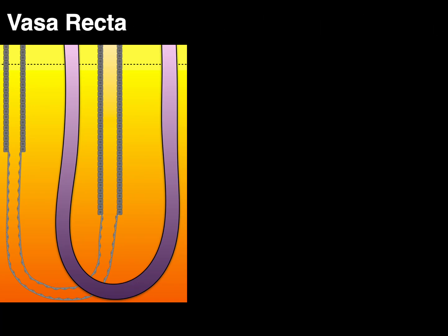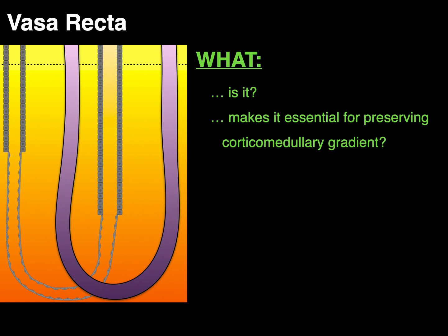We're going to talk about the vasa recta and answer the questions: what is it and what makes it essential for preserving the corticomedullary gradient?